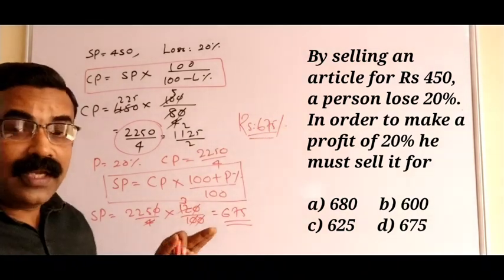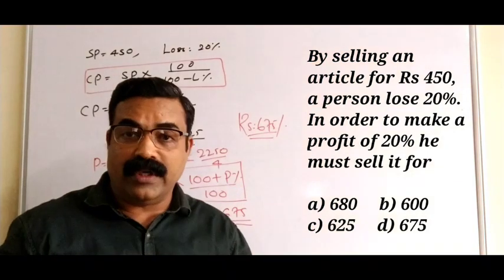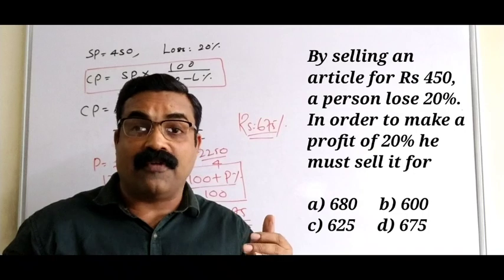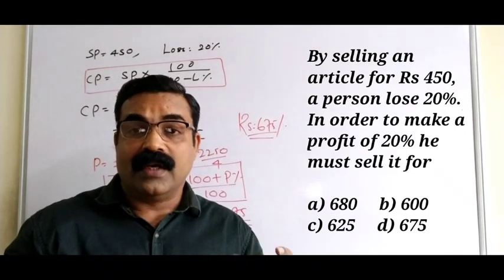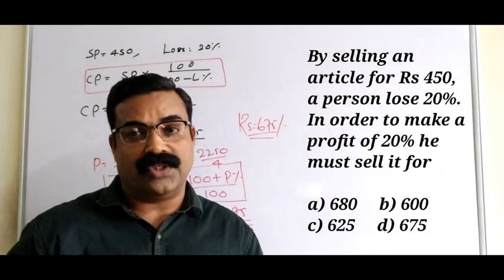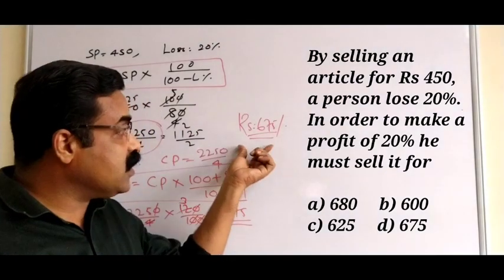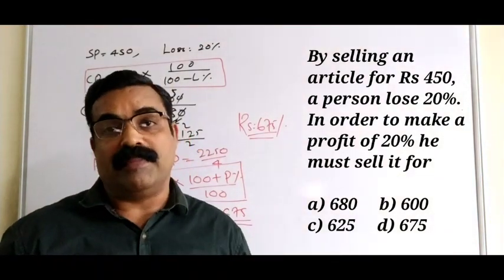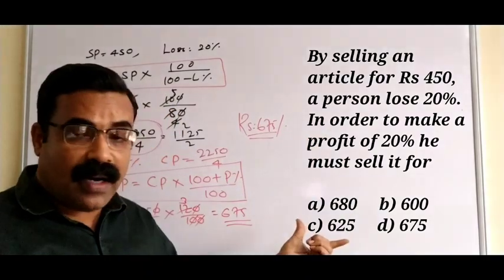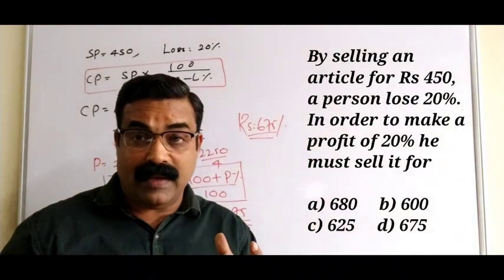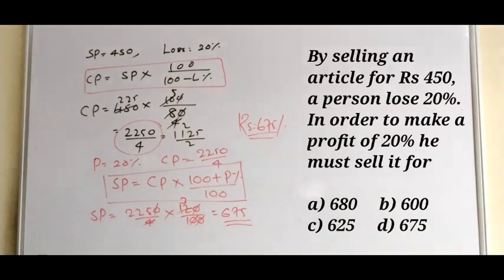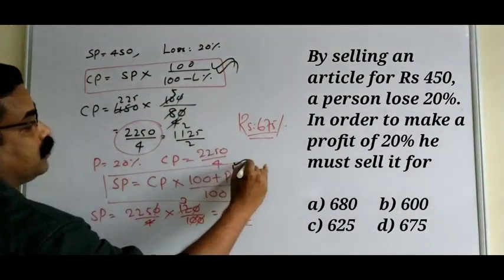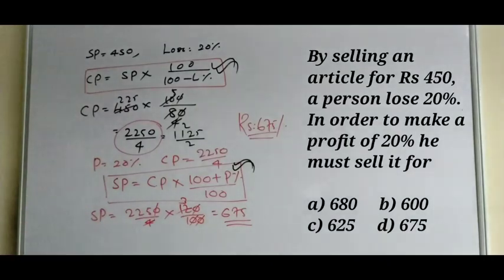If he sells it for 675 rupees, he will get a profit of 20%. Initially when he sold it for 450 rupees he got a loss of 20%, but selling for 675 rupees gives a profit of 20% — so you can mark the correct answer accordingly. Please note these important formulas; they are very, very important.